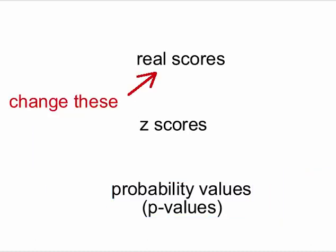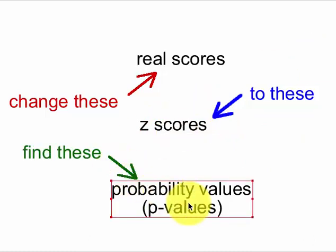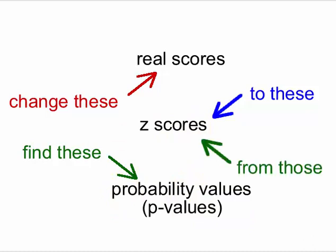Okay, so we're going to take real data scores, actually pretend, but we're going to take a bunch of test scores. We're going to change them into Z scores. And the only reason we turn them into Z scores is to look up the probability values from each Z score. We take the real scores, change them into Z scores, and from the Z scores we find the P values. That's it in a nutshell.